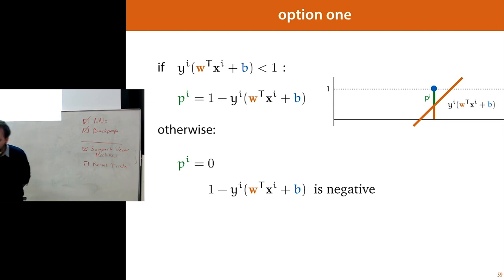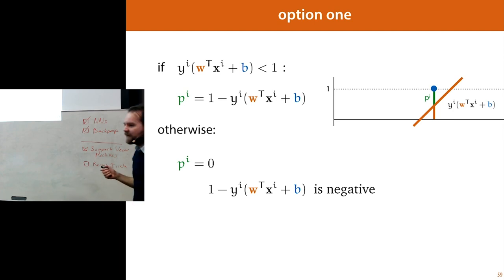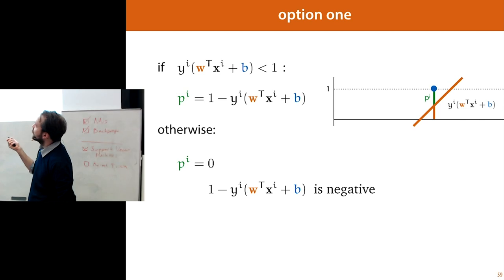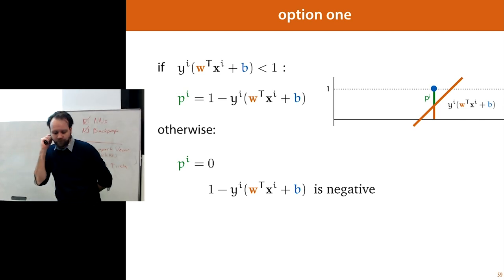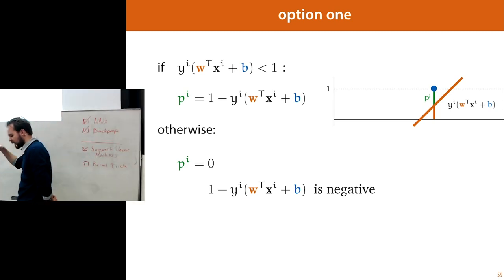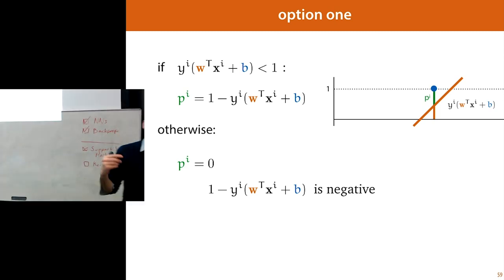Remember what I was supposed to say here — we reformulate the constraints and look at what this slack variable πᵢ value is.